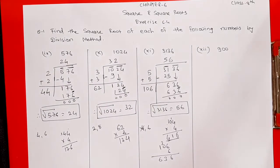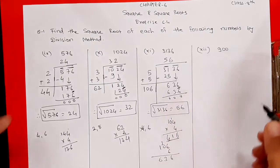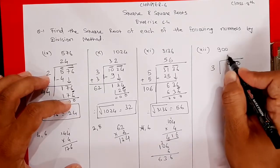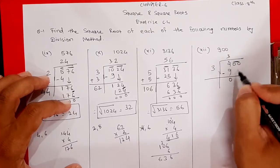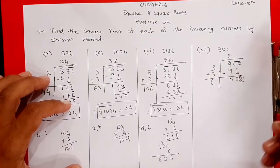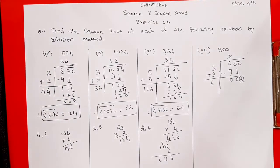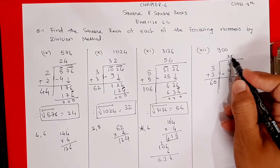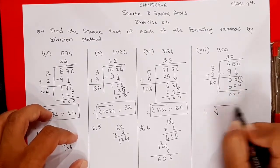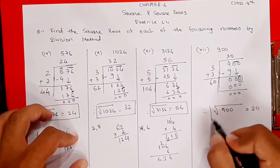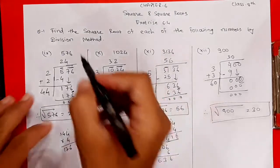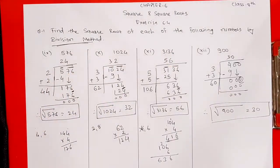The last question of question number 1 is 900. Make groups: one group of two zeros and one group of 9. Take 3²=9, subtract to get 0. Bring down 00. Add 3 + 3 = 6. Last digit is 0, which only comes after 0 — so place 0 here and above: 60 × 0 = 0. Remainder is 000. Therefore, square root of 900 is equal to 30. This was question number 1 using the division method.